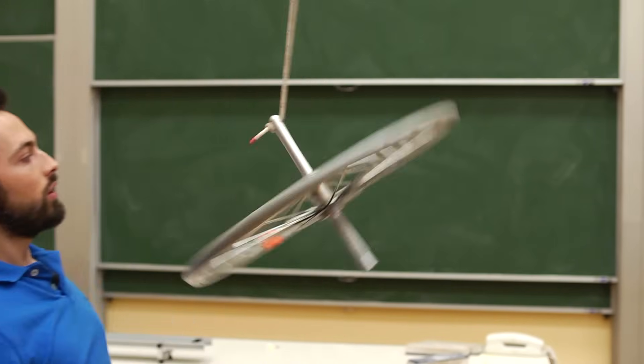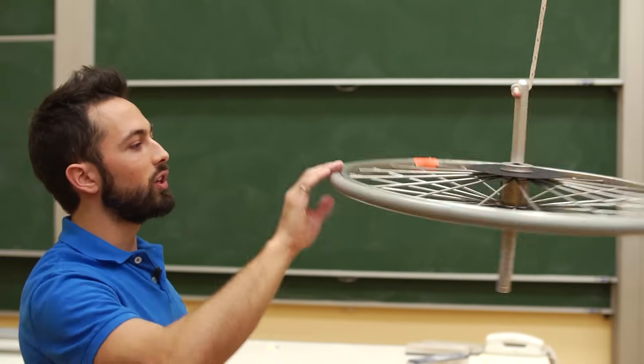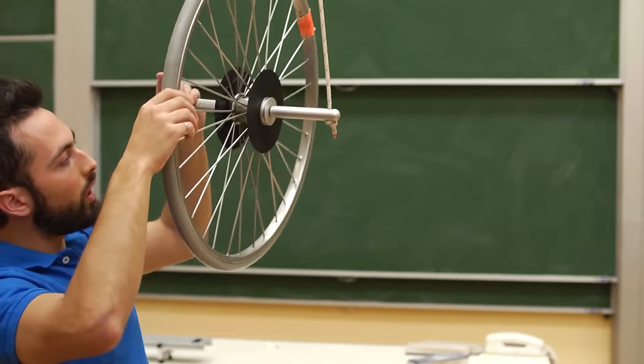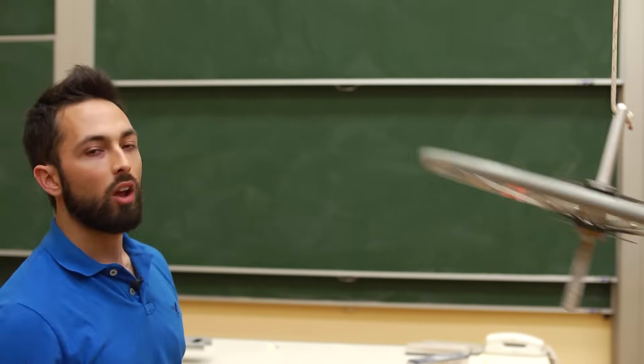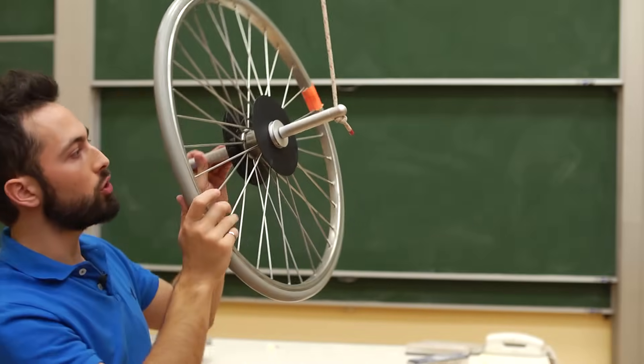So if I let go, well it does exactly what you'd expect. The wheel swings down this way. But I want to see that as an example of rotational motion.